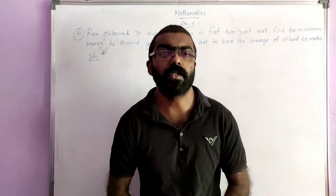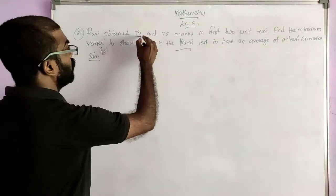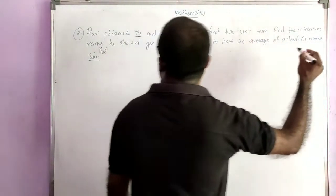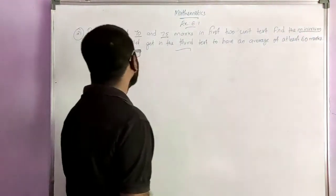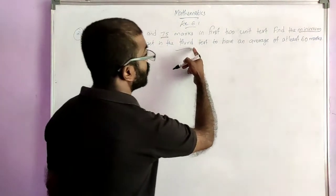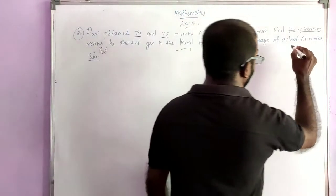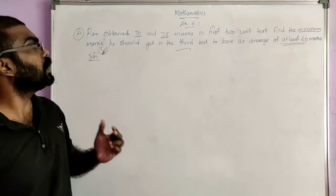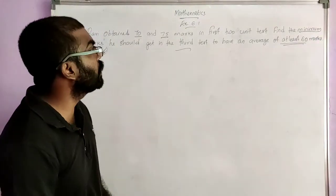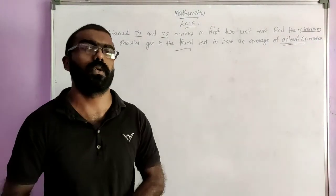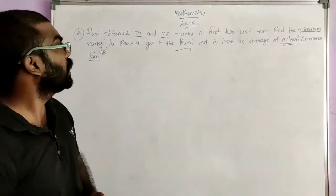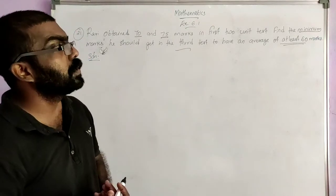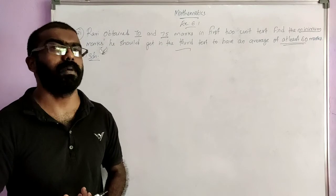Let me start with question number 21. Revy obtained 70 and 75 marks in the first 2 unit tests. Find the minimum marks he should get in the third test to have an average of at least 60 marks. So Revy obtained 70 and 75 marks in the first 2 unit tests. We have to find the minimum marks he should get in the third test in order to attain at least 60 marks average.